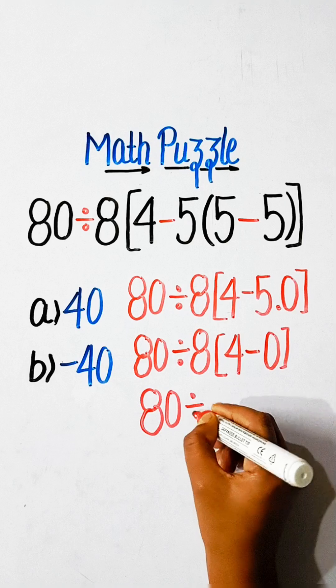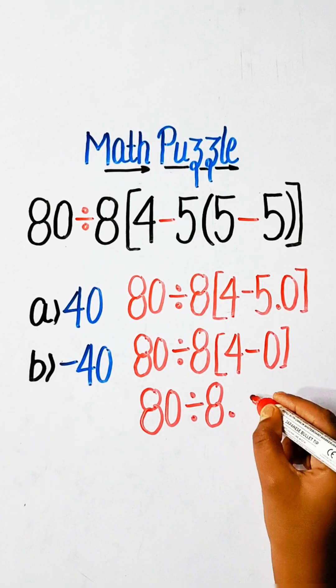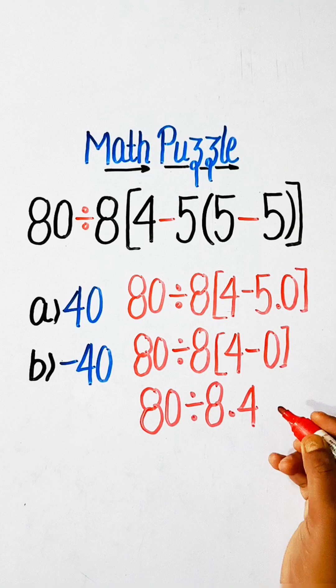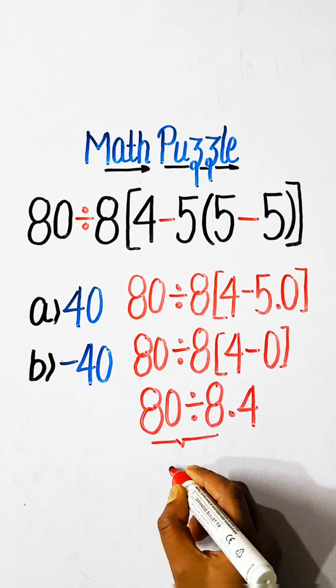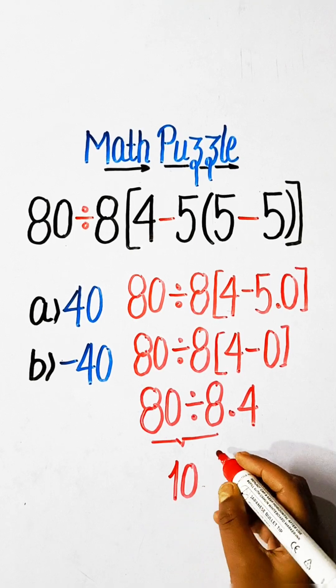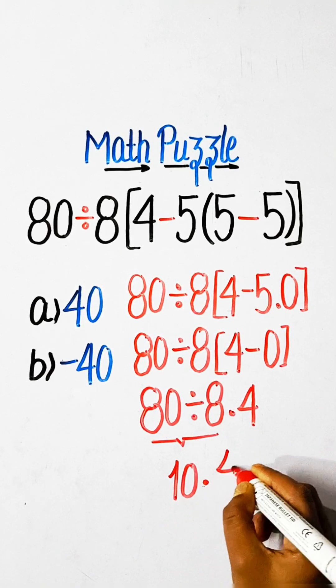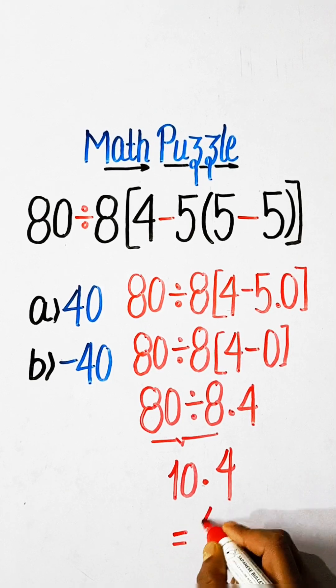So 80 divided by 8 multiplied by 4. We divide first. So 80 divided by 8 is 10 multiplied by 4 equals to 40.